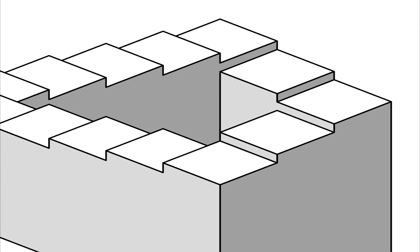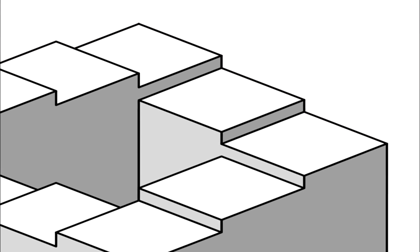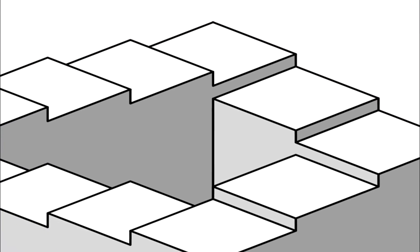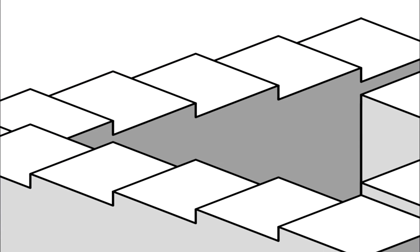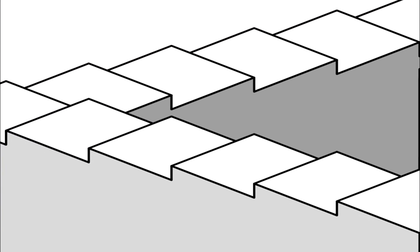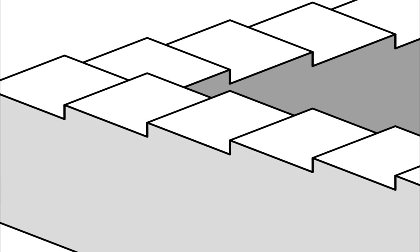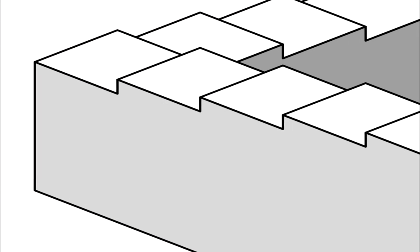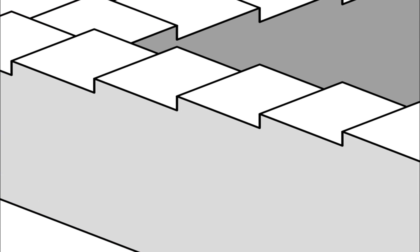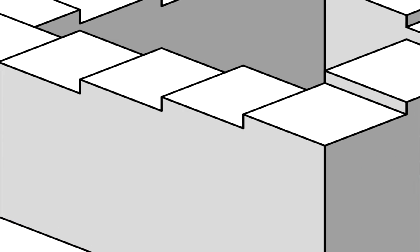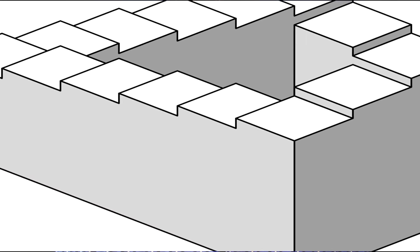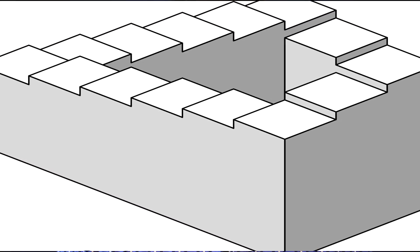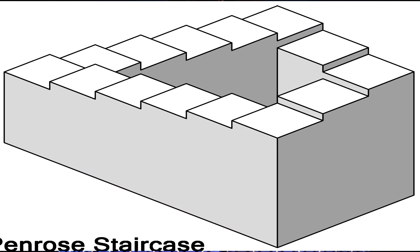Penrose stairs is a two-dimensional depiction of a staircase in which the stairs make a 90-degree turn as they ascend or descend, forming a continuous loop, so that a person would climb up or down forever without ever getting any higher or lower.